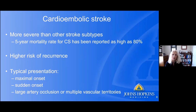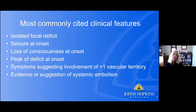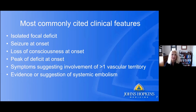The most commonly cited clinical features of cardioembolic stroke include: an isolated focal deficit referable to the affected vascular territory, a seizure at onset, loss of consciousness at onset, peak deficit at onset, symptoms suggesting involvement of more than one vascular territory, and evidence of systemic emboli. The latter makes sense because a proximal source from the heart doesn't necessarily only travel to the brain — it could go other places as well.